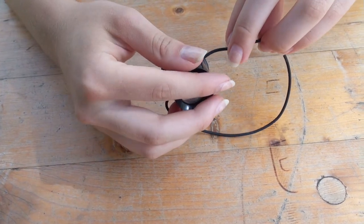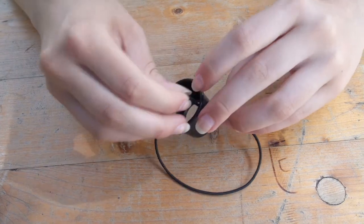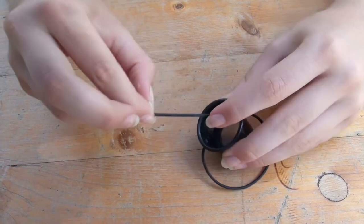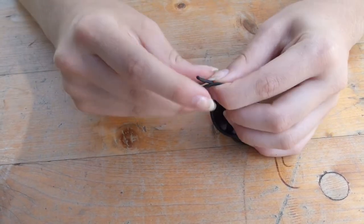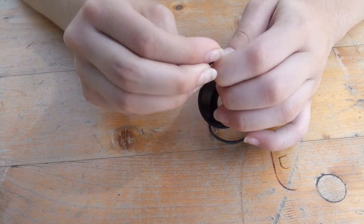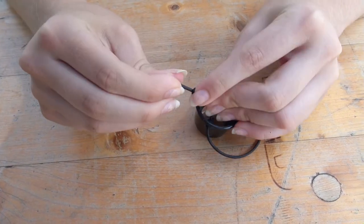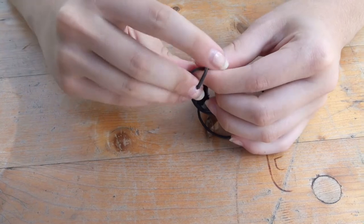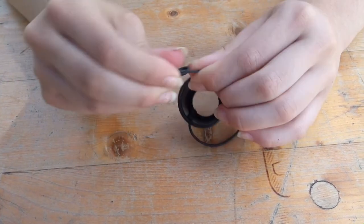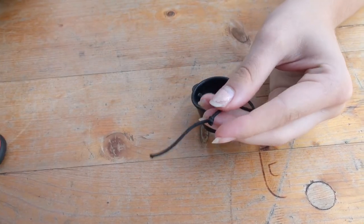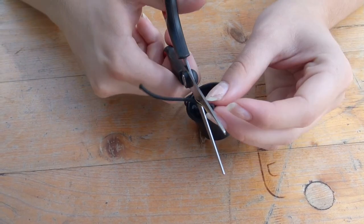Pull the rubber band through the second hole. Make one or two knots and cut off the rest right after the knot.